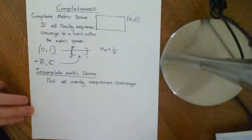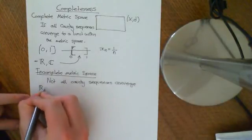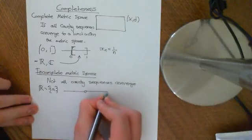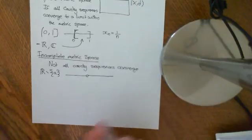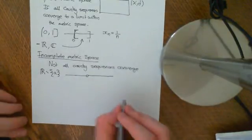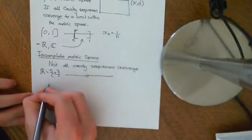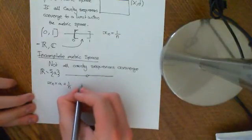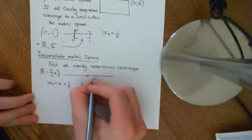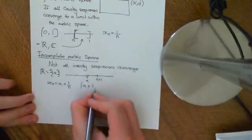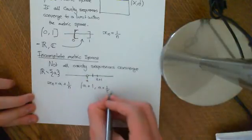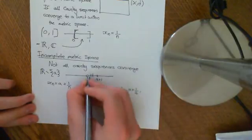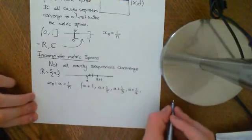Another example of an incomplete metric space is the real line minus a single point. If you take the real line and remove a single point, that is no longer complete. We can create sequences which converge there — for instance, x_n equal to a plus 1/n. Writing out some terms: a+1, then a+1/2, a+1/3, a+1/4, and so on — this sequence decreases monotonically toward a.